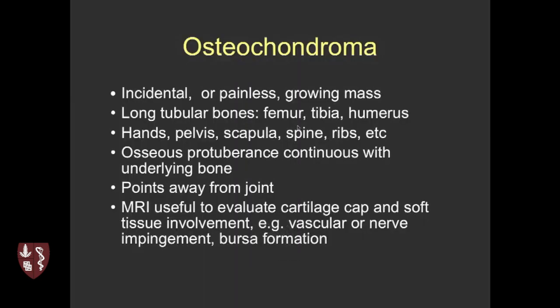These are often incidental and painless. They can grow over time, occurring in long bones — femur, tibia, humerus — and many other locations. They're continuous with the underlying bone, and if around the knee, they point away from the joint, arising in the region of the growth plate. MRI is good for looking at the cartilage cap and soft tissue involvement, which can be complications.